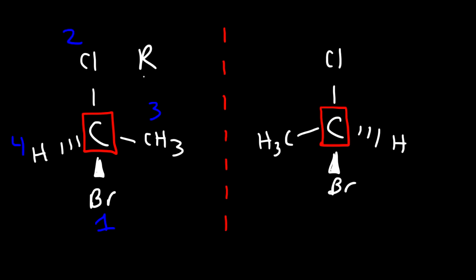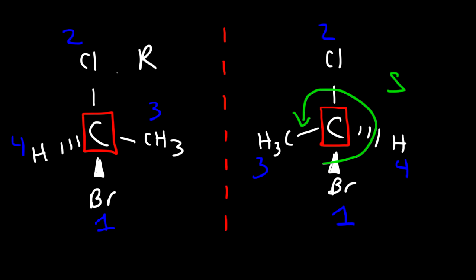The enantiomer needs to have the opposite configuration. Bromine is still number 1, chlorine is 2, methyl is 3, and H is 4. Counting from 1 to 2 to 3, we're going counterclockwise, so we have the S configuration. Whenever you have one chiral center, you automatically have an enantiomer, and enantiomers will always have opposite configurations.